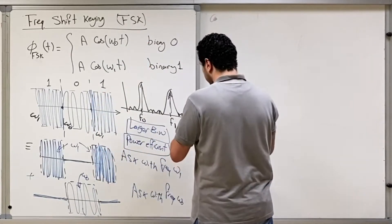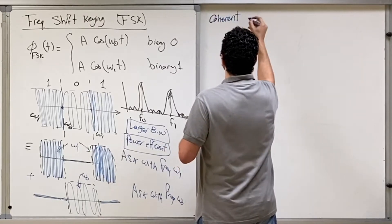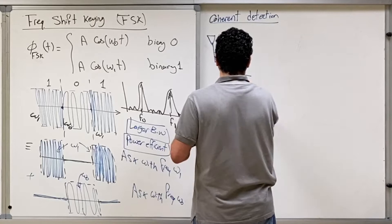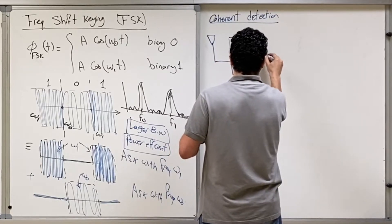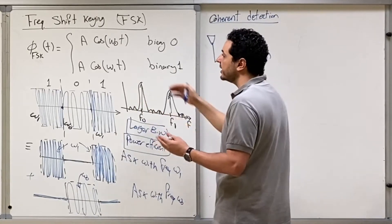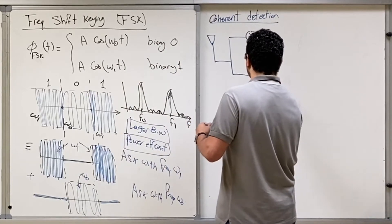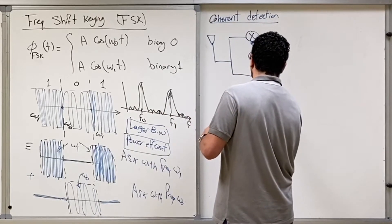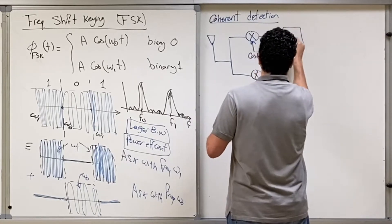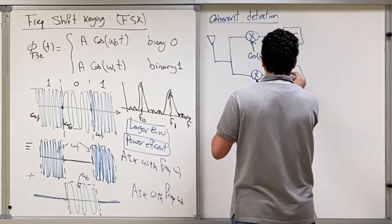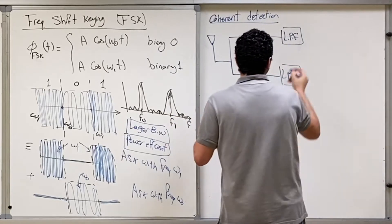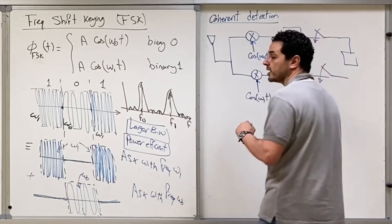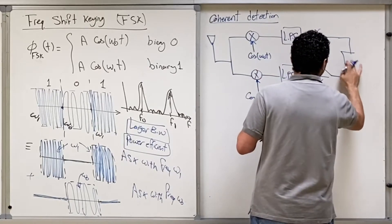Let's start with coherent detection. In coherent detection, you receive the signal and divide it into two branches. In the first branch, you multiply by cosine omega-zero t, assuming the received data is binary zero, and try to demodulate it. In the second branch, you assume the received information is binary one and try to demodulate. You then pass through a low-pass filter, sample the output, measure the voltage in each branch, and compare them through a comparator.